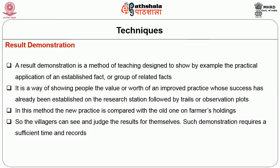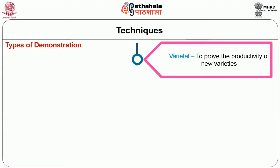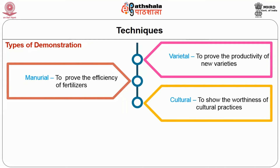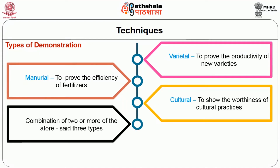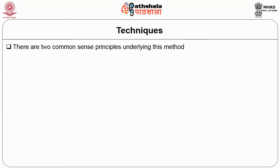Result demonstration requires sufficient time and records; it is not an experiment or trial. It may be varietal to prove the productivity of new varieties, manurial to prove the efficiency of fertilizers, cultural to show the worthiness of cultural practices, or a combination. A composite demonstration includes all essential improved practices for a crop as a package. Two underlying common-sense principles are: a farmer will believe what he does or sees himself, and under similar conditions what is good for one person will be good for others.